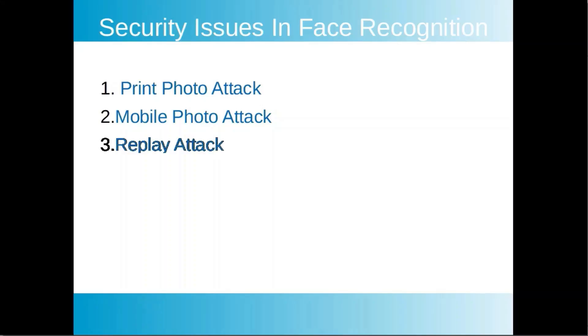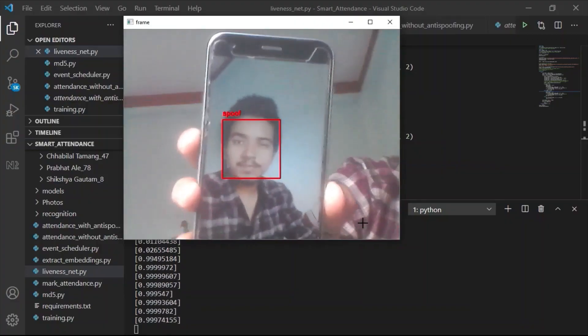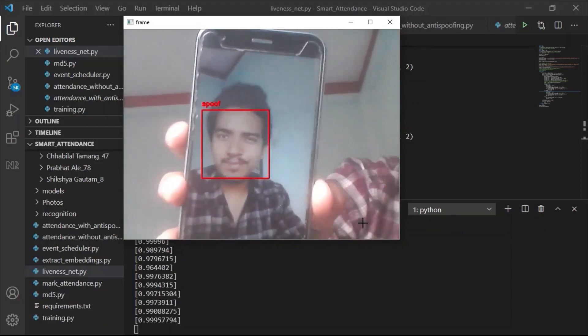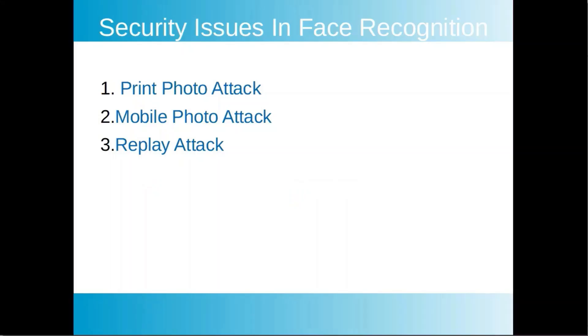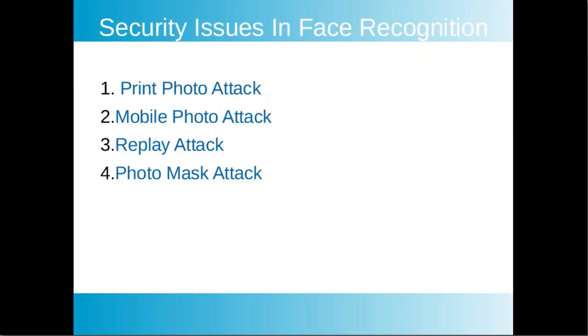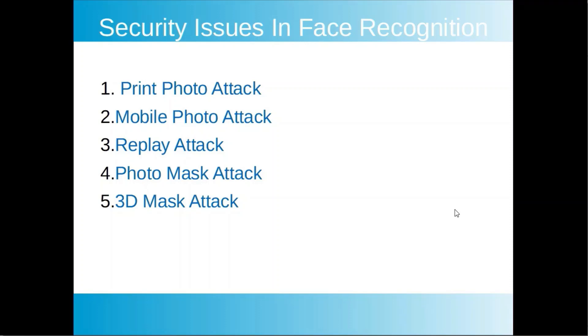Another type of attack is the replay attack, where the attacker uses a video of a person to gain access to the system. Next is the photo mask attack, where the attacker creates a mask from a 2D photo and uses that mask to spoof the system. Finally, the 3D mask attack is a very complicated attack in which the attacker acquires a 3D mask of a person and uses it to gain access to the system.